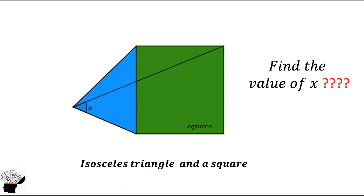An isosceles triangle is a triangle which have two of its sides to be equal. So in this diagram, this side and this side is equal.